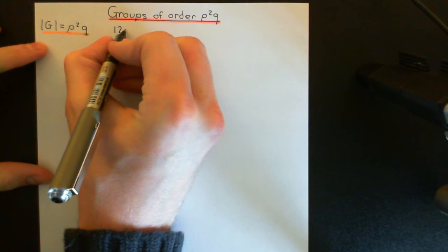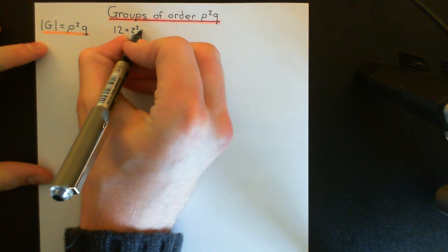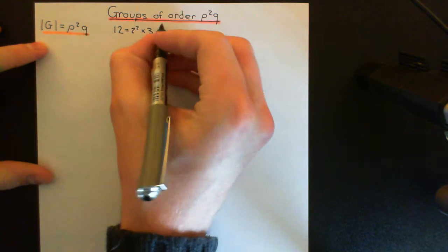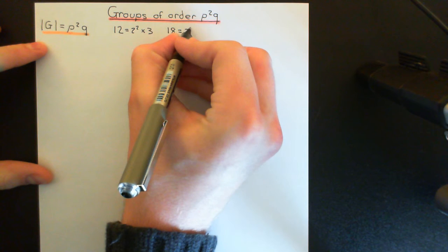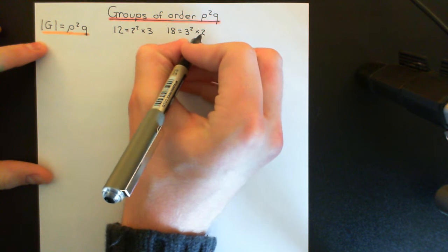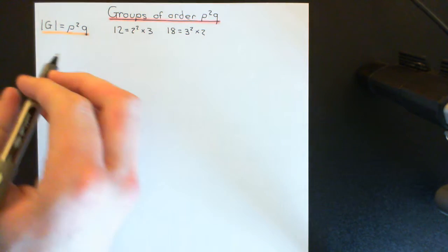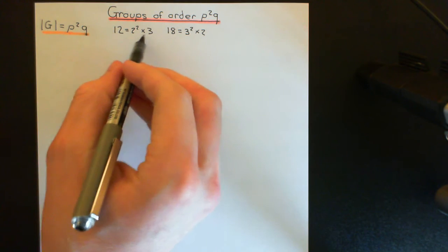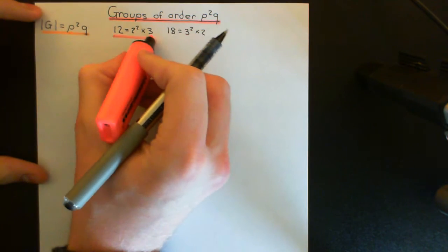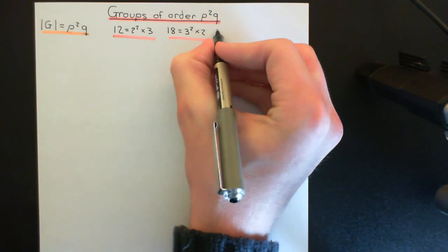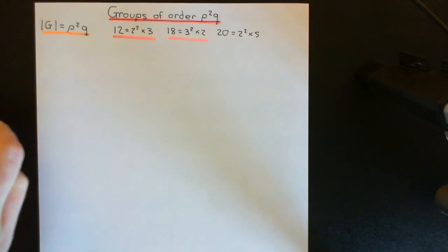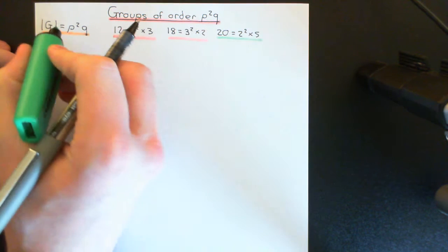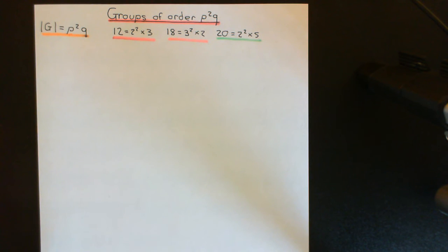An example is 12. If we take its prime factorization, it's 2 squared times 3, so p would be equal to 2 and q equal to 3. Another example is 18: its prime factorization is 3 squared times 2, so p is 3 and q is 2. Another example would be 20, which is 2 squared times 5, so p is 2 and q is 5. You can easily devise more examples by substituting different primes.